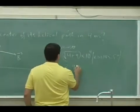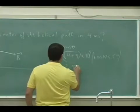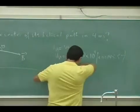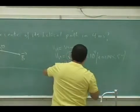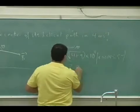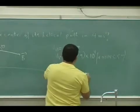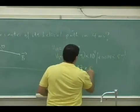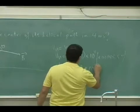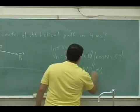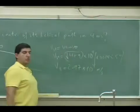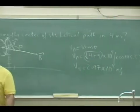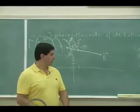The parallel component works out to approximately 2.097 times 10 to the fourth meters per second. The parallel component is not affected by the magnetic field.